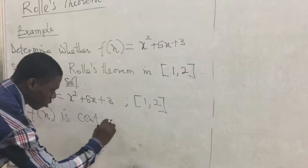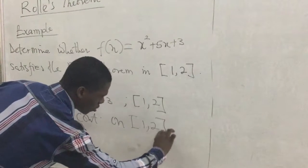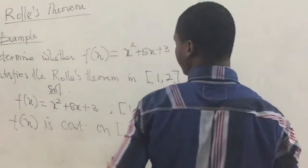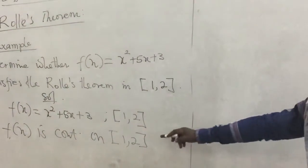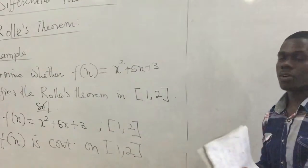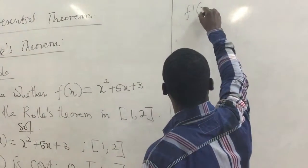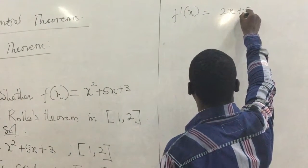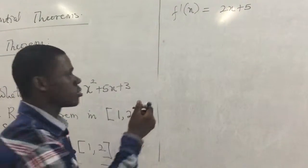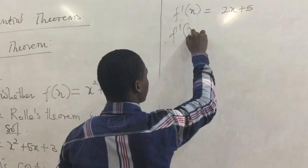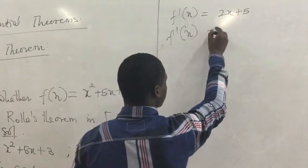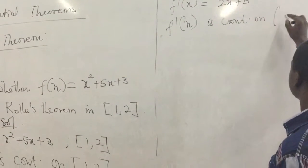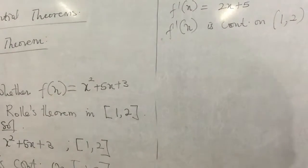So f(x) is continuous on the closed interval. Next, we want to see whether the derivative of this function is also continuous on the interval. We find f′(x) = 2x + 5. This is continuous, so we say f′(x) is continuous on the open interval (1, 2).